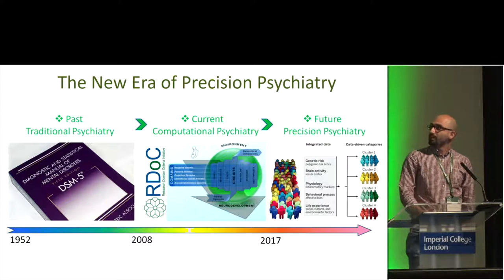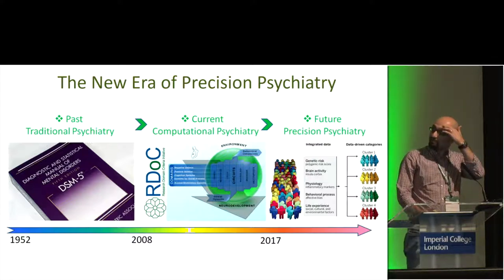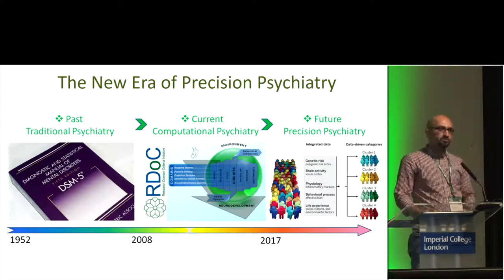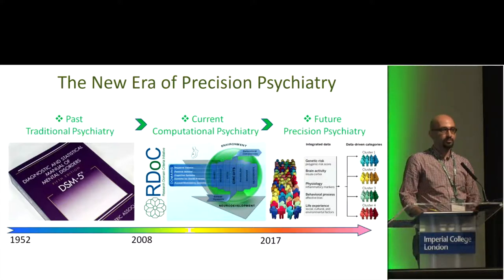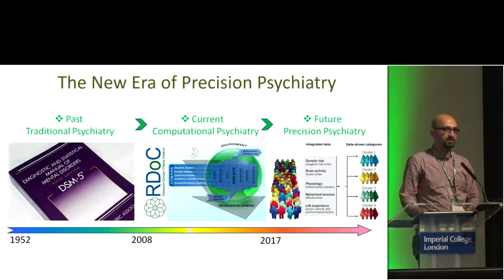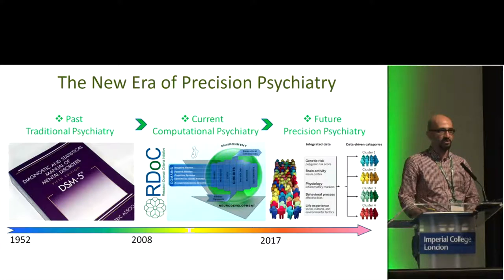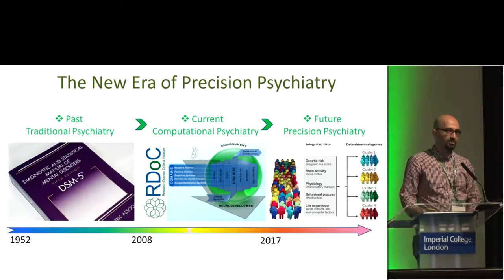The Diagnostic and Statistical Manual for Mental Disorders, since its introduction in 1952, is a gold standard for diagnosing, treatment, and stratification of mental disorders. But it has been recently under heavy criticism because it only relies on symptoms and overlooks the biological underpinnings of mental disorders.